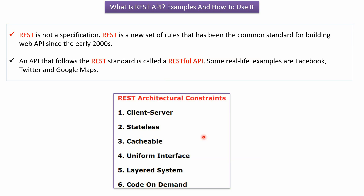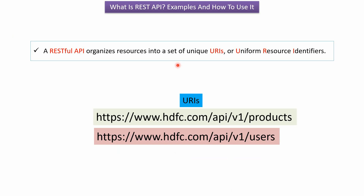Some real life examples of RESTful APIs are Facebook, Twitter, and Google Maps. A RESTful API organizes resources into a set of unique URIs — Uniform Resource Identifiers. Here you can see examples of URIs, and in this case the resources are products and users.